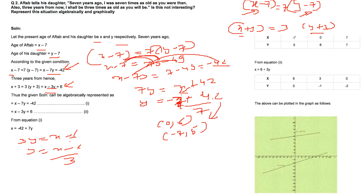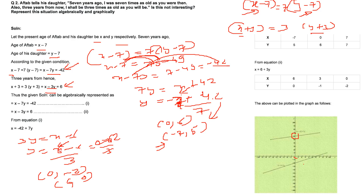Let us mark the points for the first equation: (0, 6) — X is 0, Y is 5 — and (−7, 5). For the second equation: (0, −2) and (6, 0). These are the X-intercepts and Y-intercepts, also called abscissa and ordinate. With two points for each line, we can draw both straight lines on the graph.